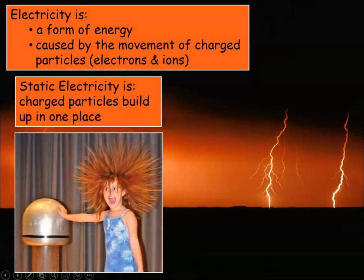Static electricity is where charges build up in one place. This is a picture of a Van de Graaff generator — maybe you've had a chance to see someone use this or use it yourself — where it becomes positively charged. There's a buildup of positive charge at the top because electrons are taken away and move down below.